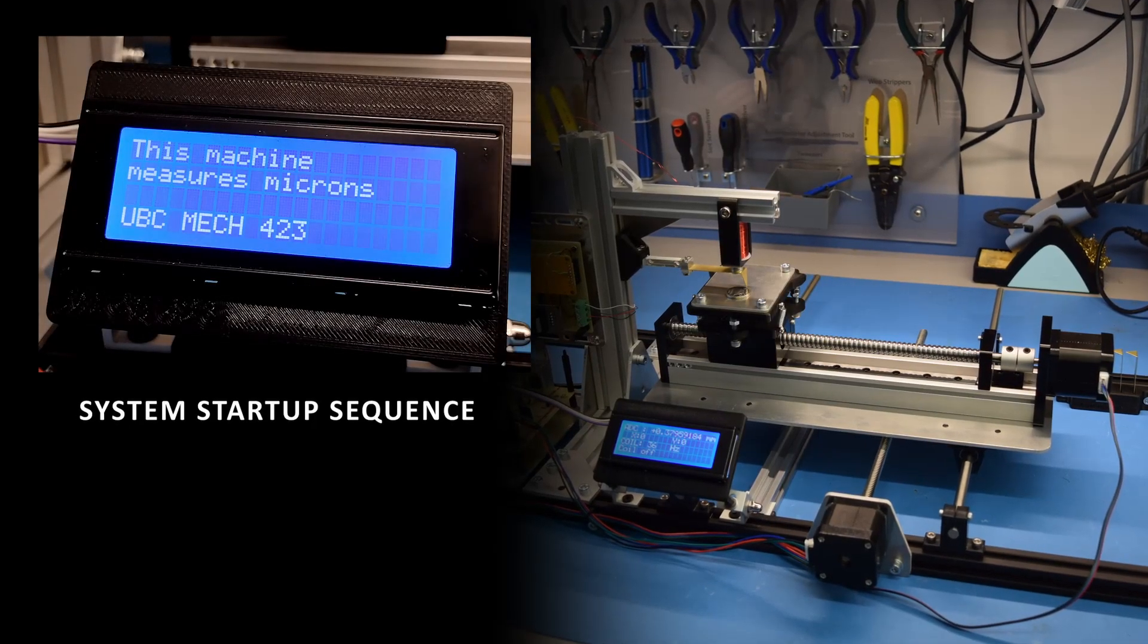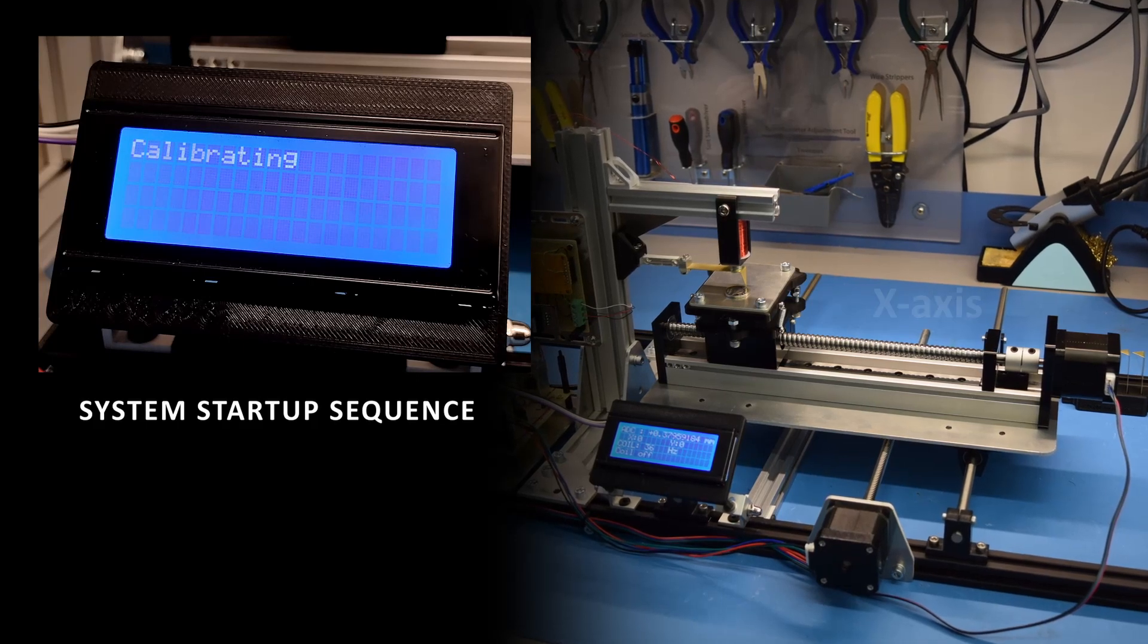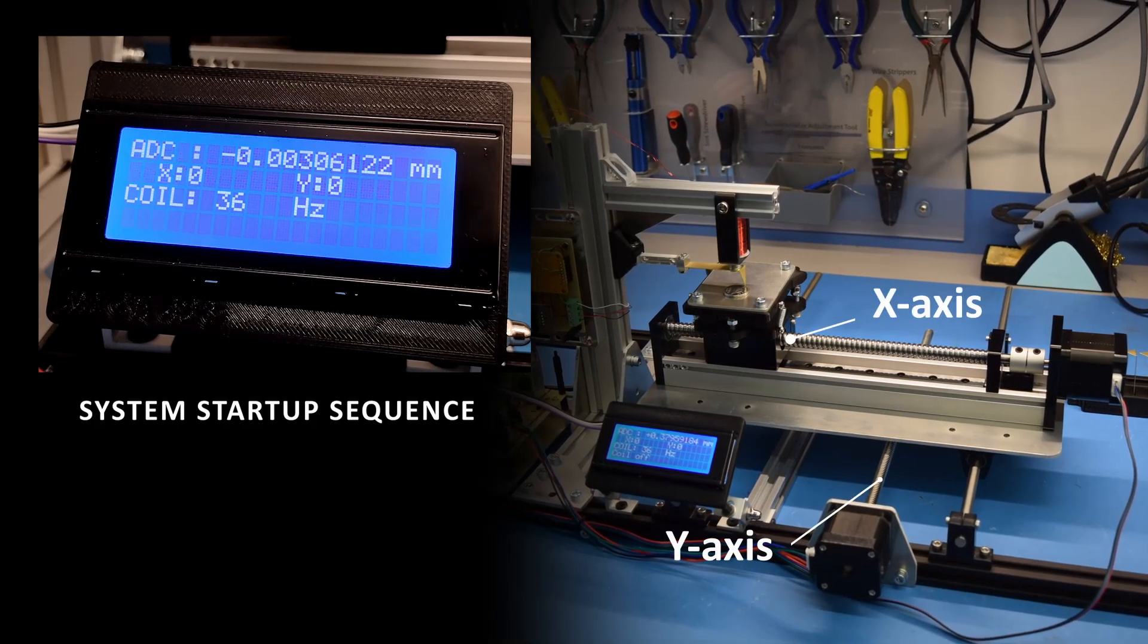The mechanical structure consists of a two-axis motion stage with stepper motors using a ball screw in the x-axis and lead screw in the y-axis.